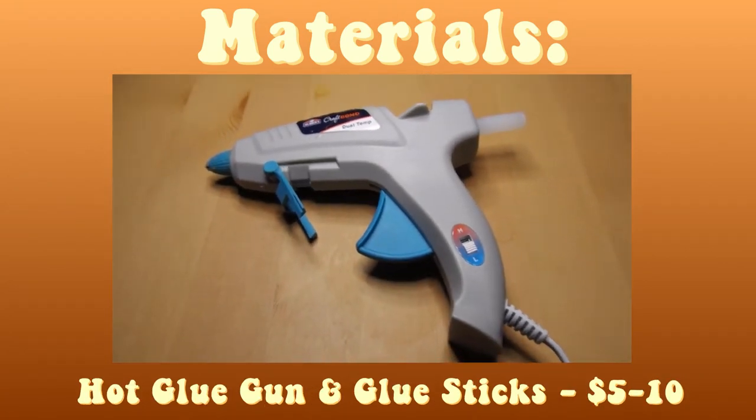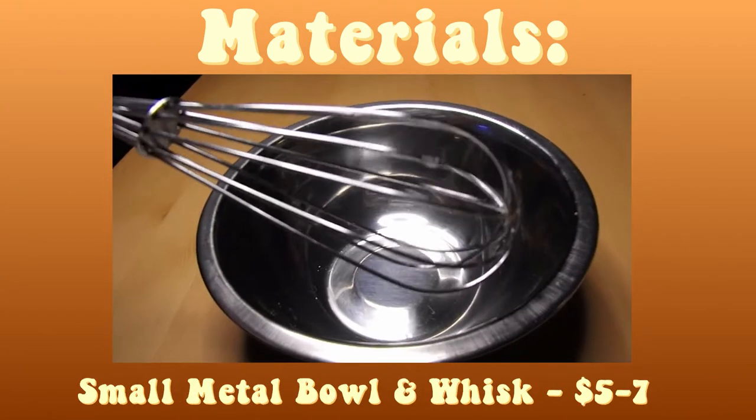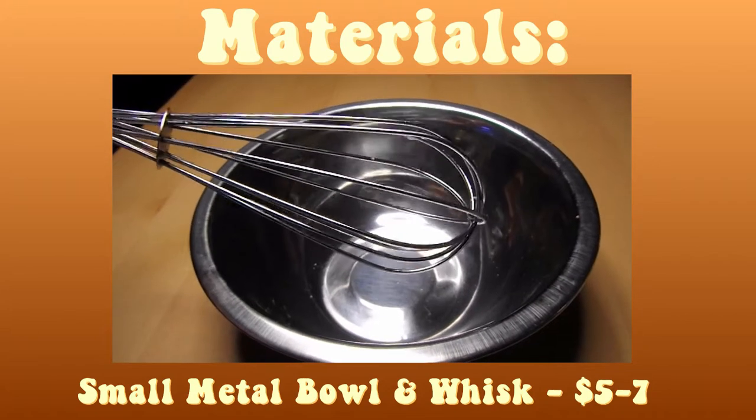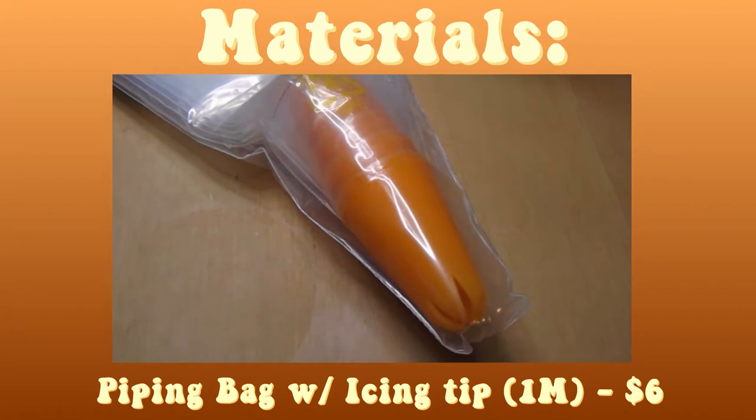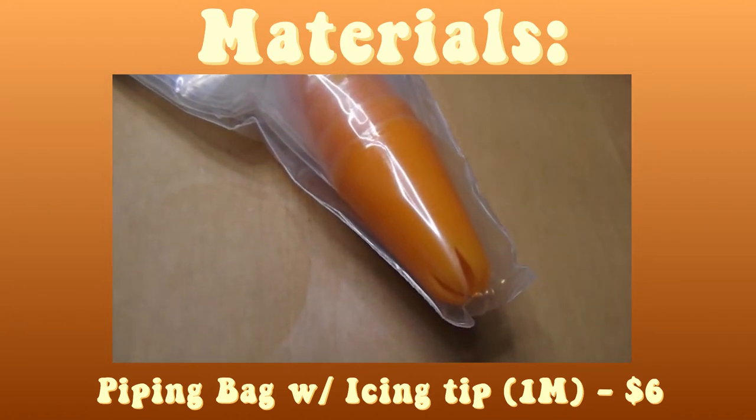Glue gun and glue sticks. A metal bowl with a metal whisk. An icing piping bag. And you're gonna want to get one that has a star-shaped end like this.